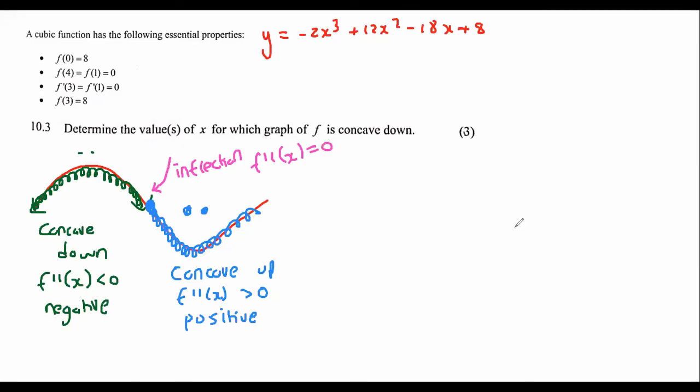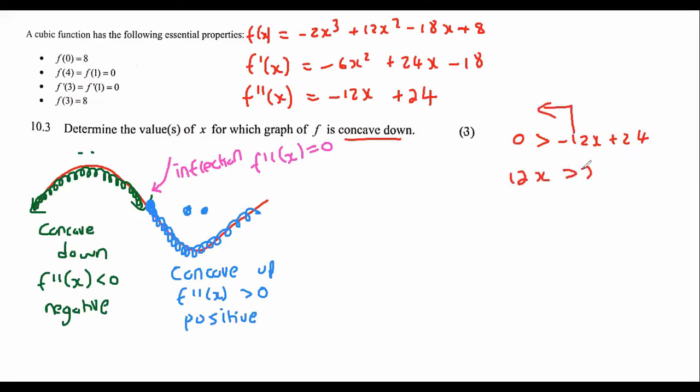So moving on, they say determine the x value where the graph is concave down. So the second derivative must be negative because it's down. So I take my first derivative. And then I just repeat the process for the second derivative. Like that. And then I know that to make it concave down, my second derivative must be smaller than zero. So I can go minus 12x plus 24 must be smaller than zero. And now I'm just going to take this x over to the other side. And so what I find if I solve is that x must be greater than two. x is greater than two.